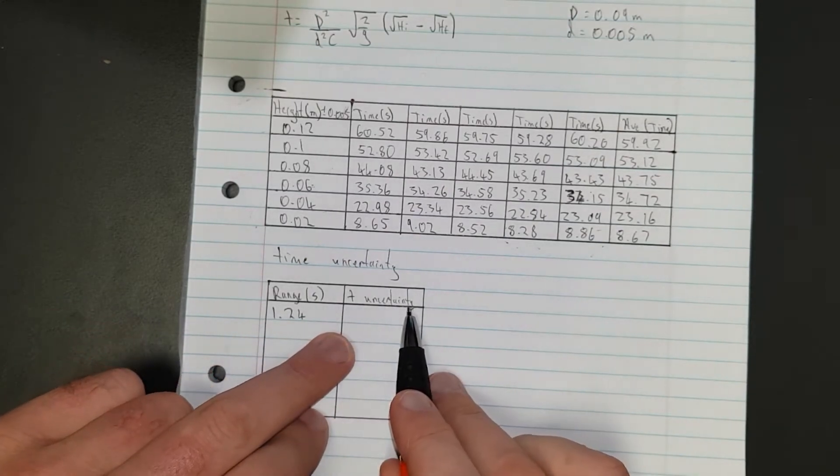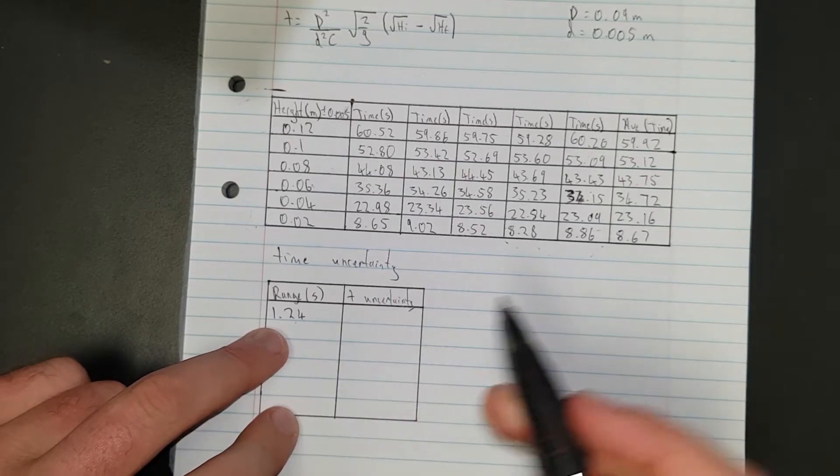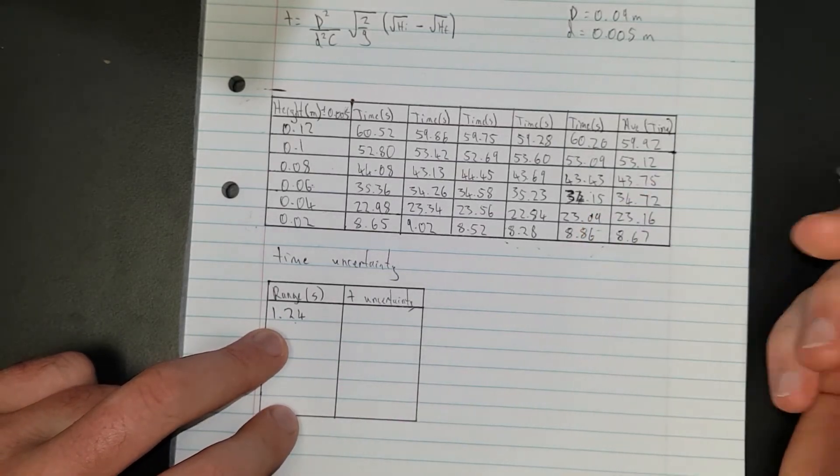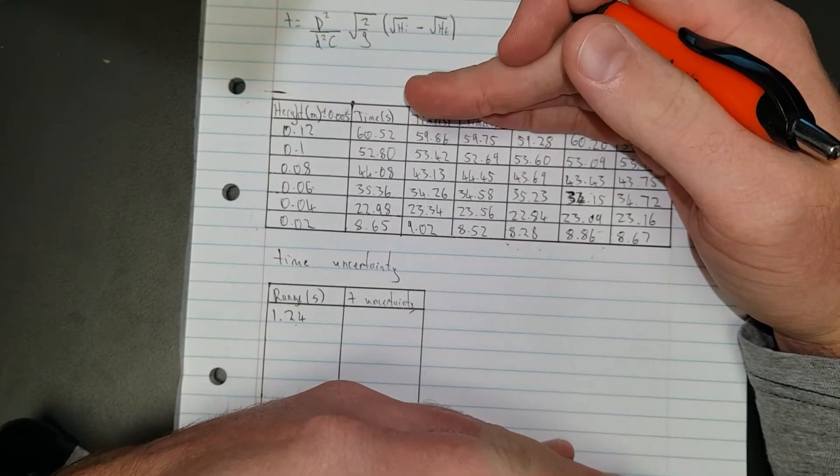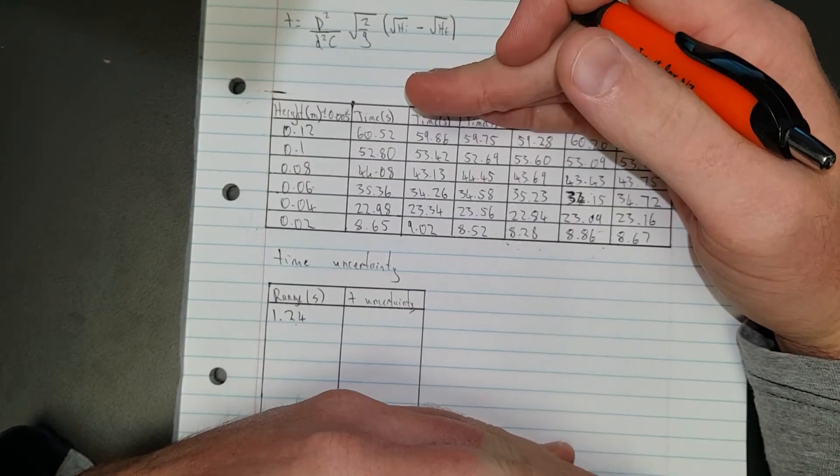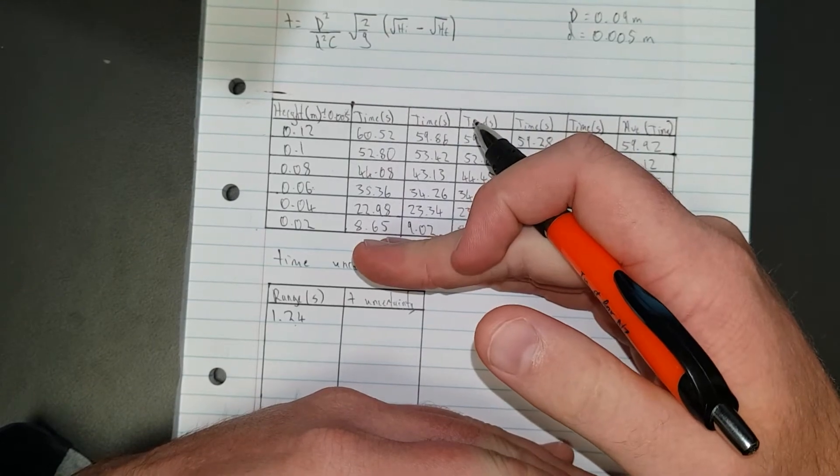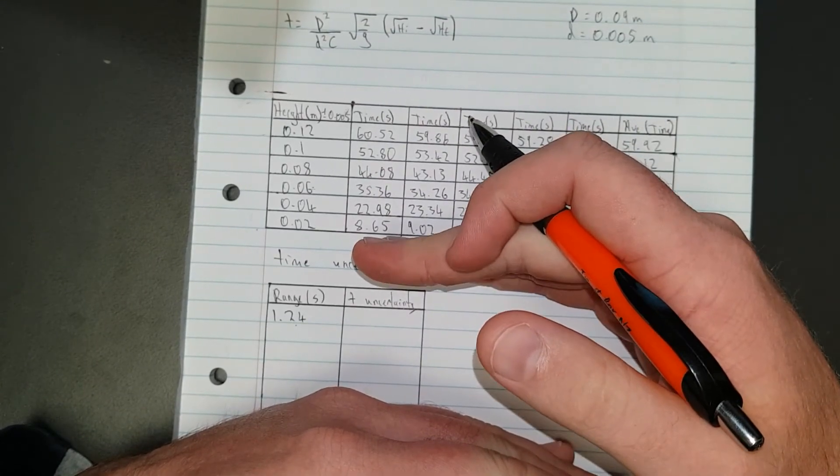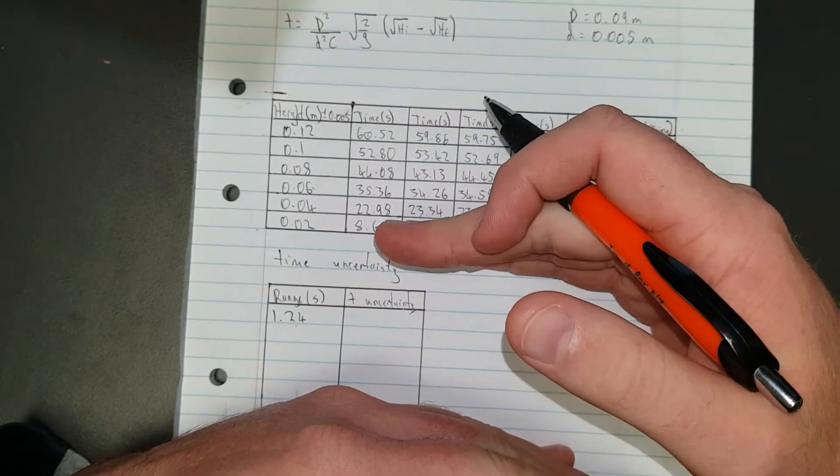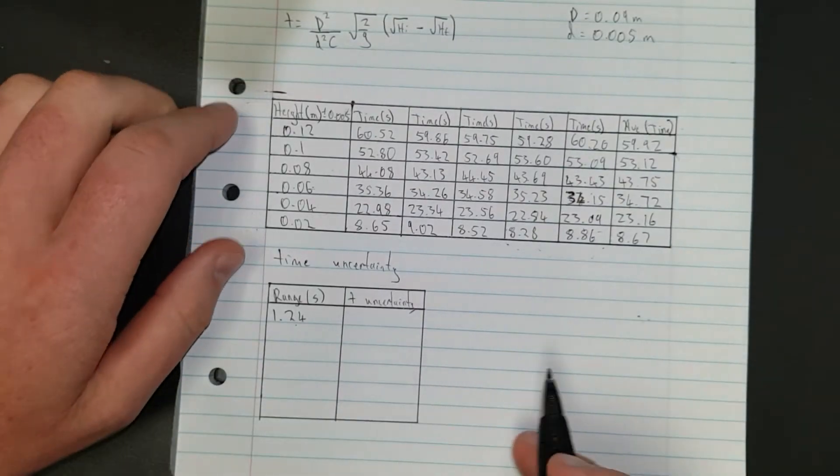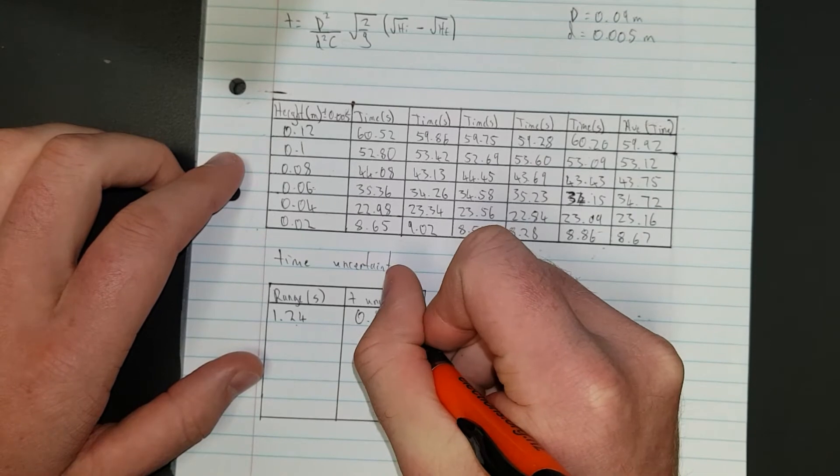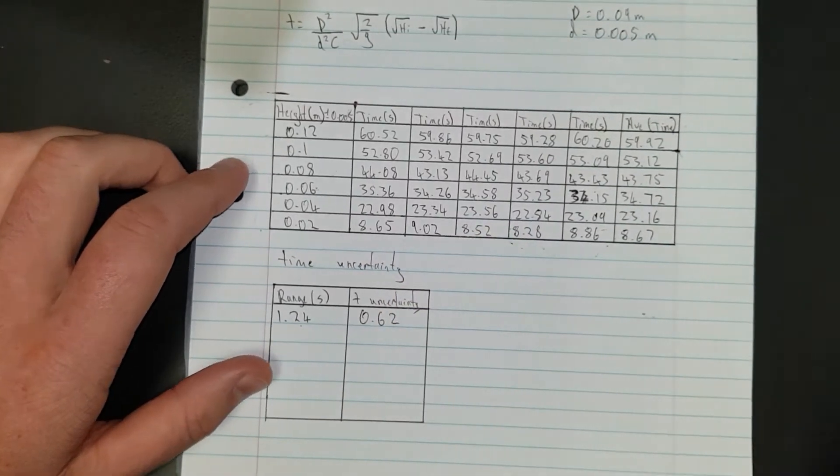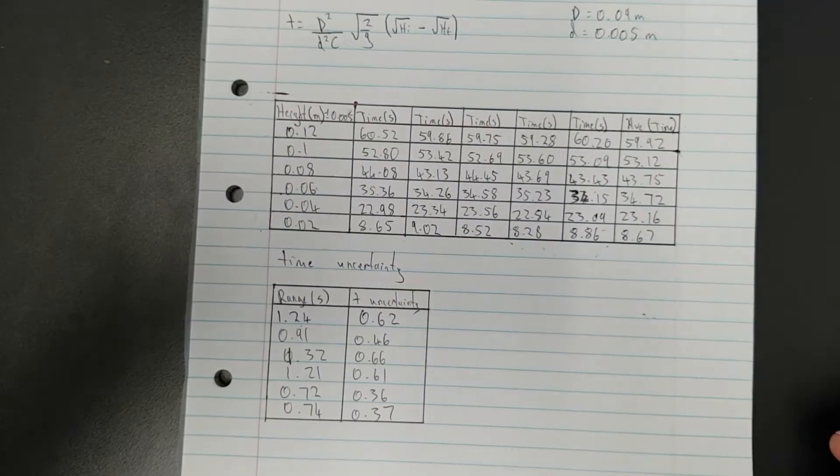The uncertainty is just half that. If this is the maximum the number could have possibly been and this is the minimum, that's the range. The uncertainty is in the middle because then it's plus or minus the uncertainty - it could be up to the top of the range or down to the bottom. So the uncertainty is half of 1.24, which is 0.62.